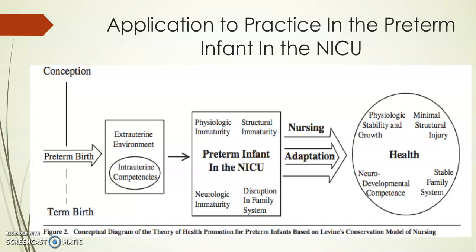This looks at the immature infant who is now abruptly exposed to an extra-uterine environment that provides a poor fit for the developing physiological system. The parents are simultaneously dealing with two potential crises: the birth of a child and the illness of a family member. Both of these can cause a disruption to wholeness.